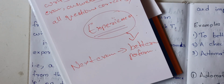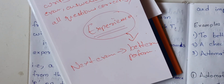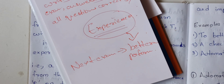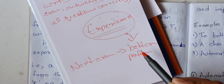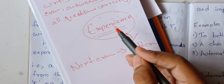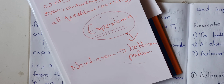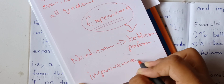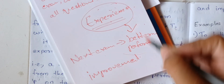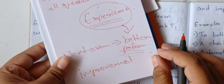I will prepare the task. We will prepare the task. We will have experience. So we will prepare the next exam. We will perform better. We will improve. So there is an improvement. We will perform better and we will improve.